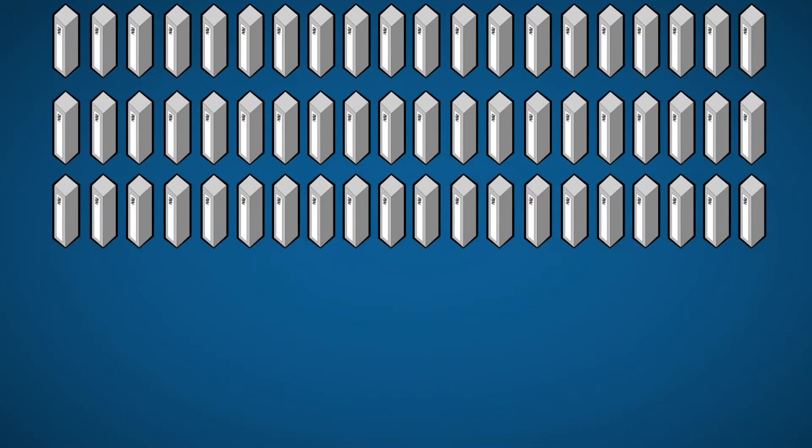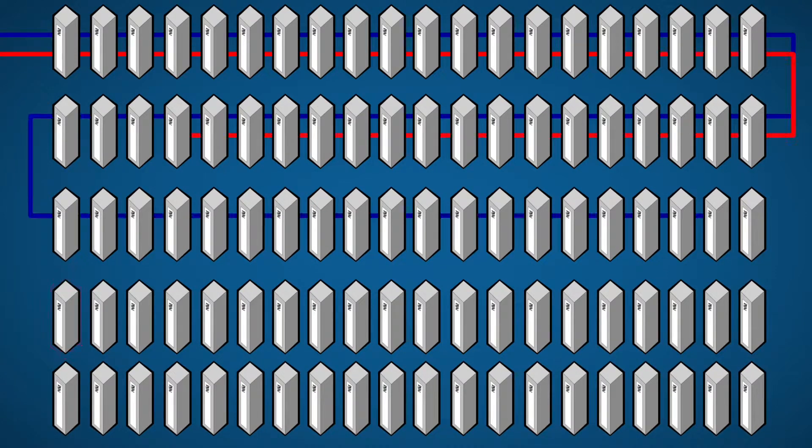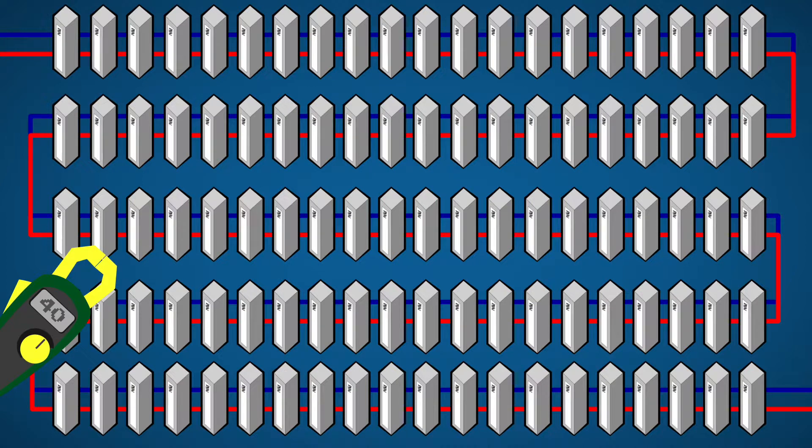Using our same example, at the 61st decoder down the path, our reading before the decoder should be 100 mA minus 60 or 40 mA.